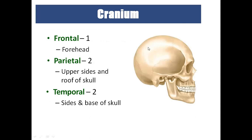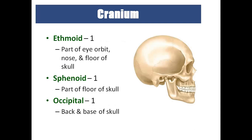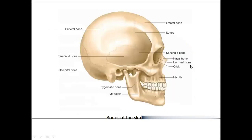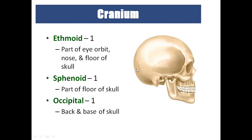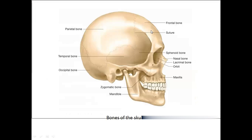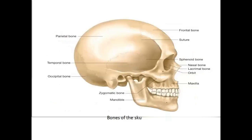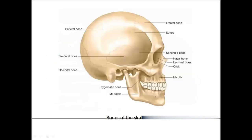The cranium contains: one frontal bone, two parietal bones, two temporal bones, one occipital bone, one sphenoid bone, and one ethmoid bone — all together called the cranial bones, which majorly cover the brain. The joints between these skull bones are called sutures because they look like stitches.